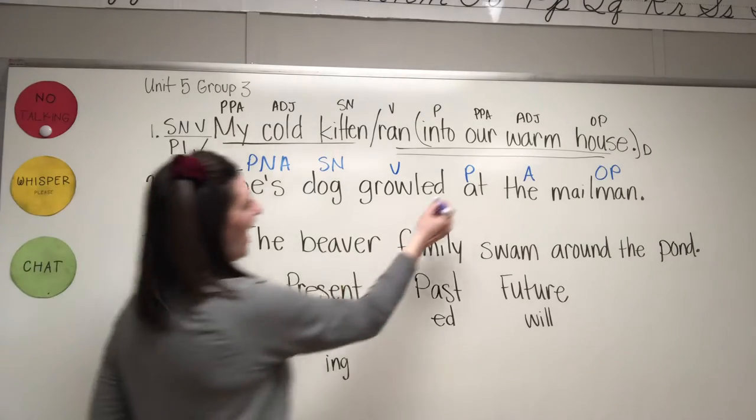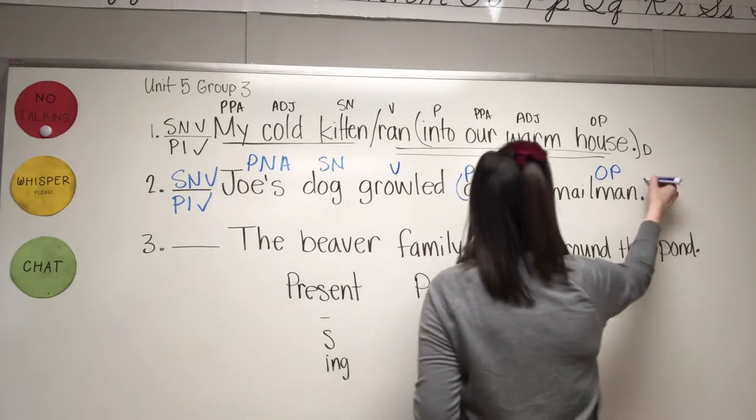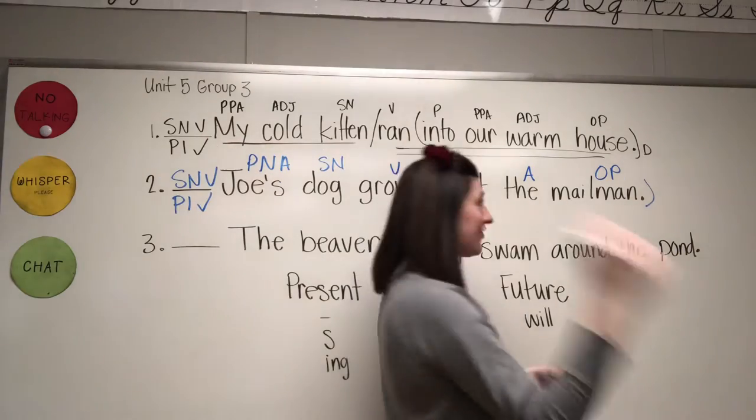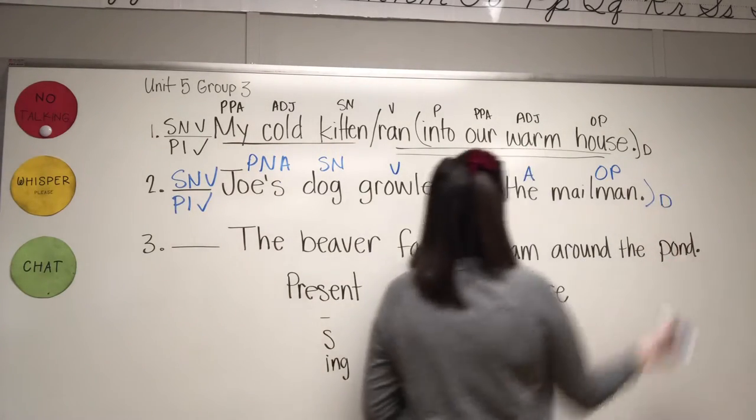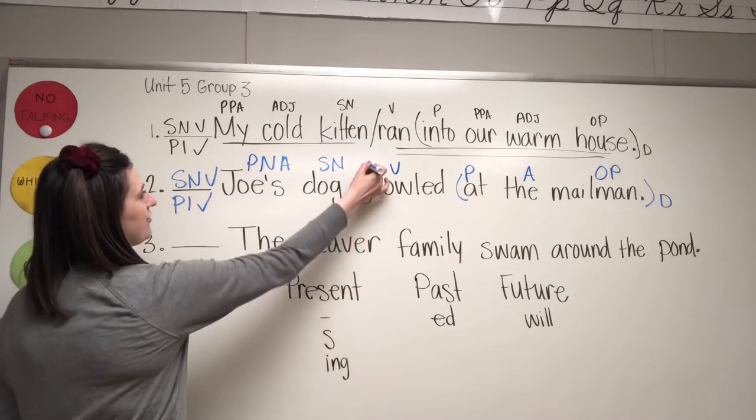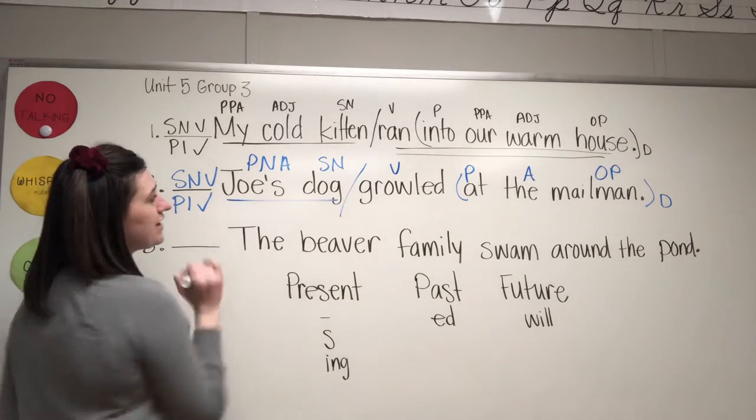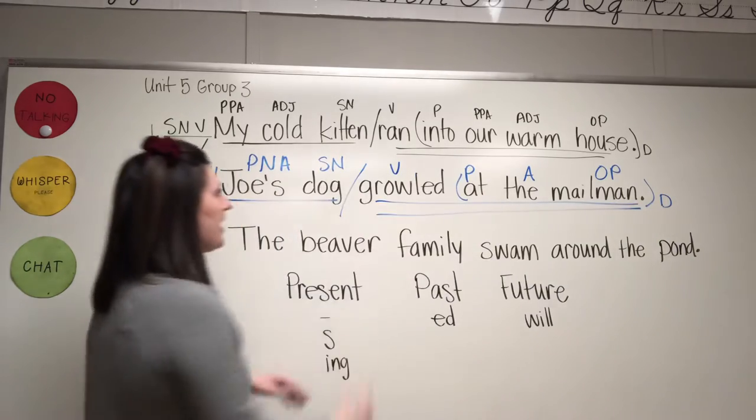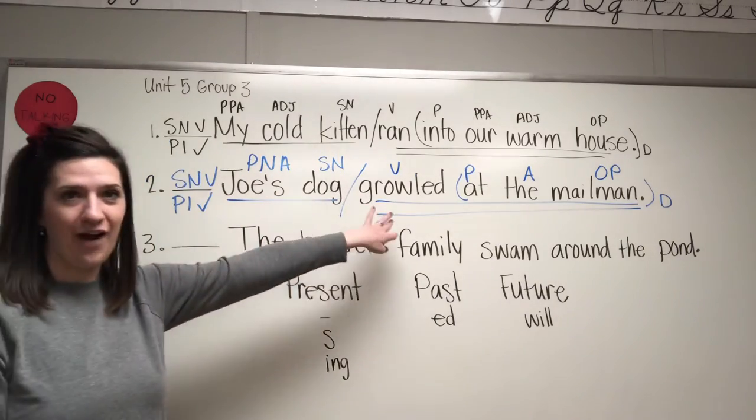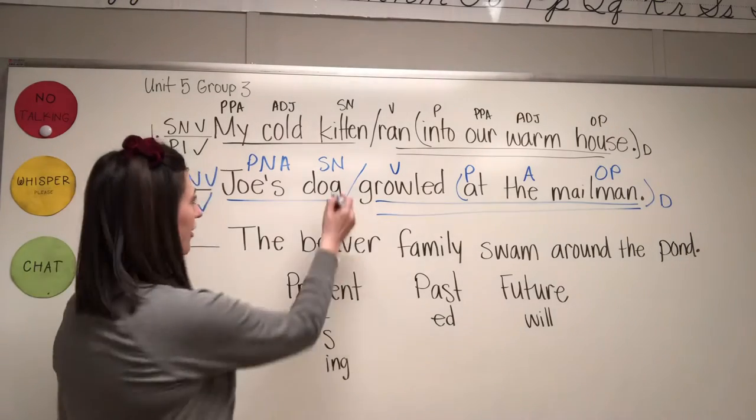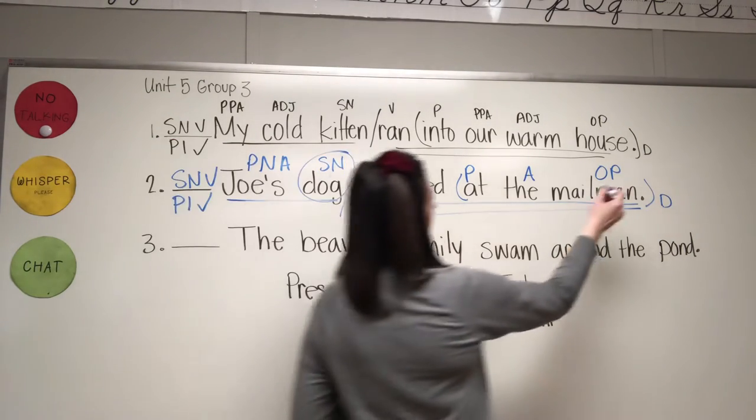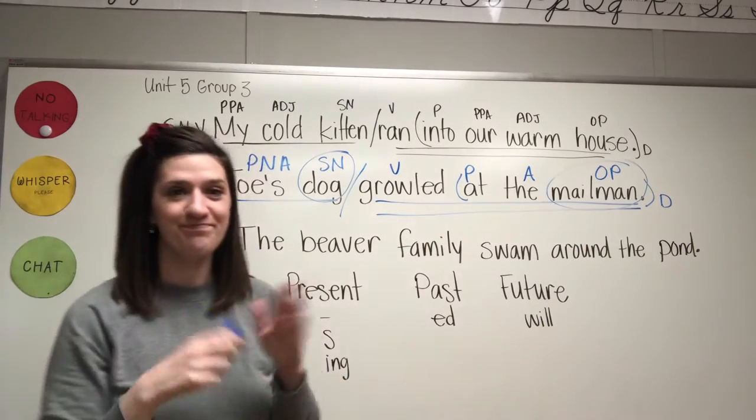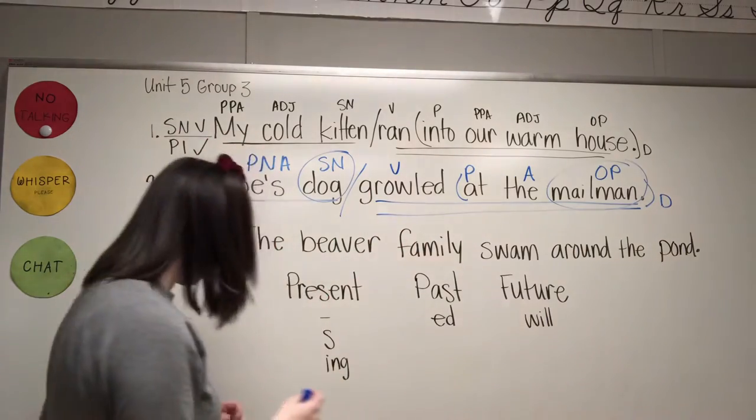At the mailman. Prepositional phrase. Period. Statement. Declarative sentence. Go back to the verb and divide the complete subject from the complete predicate. Dog growled. And the two nouns are dog and mailman. There we go. Sentence number one. Well, number two.